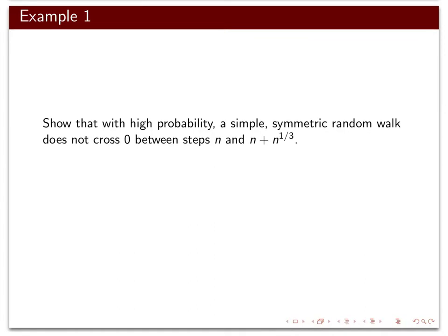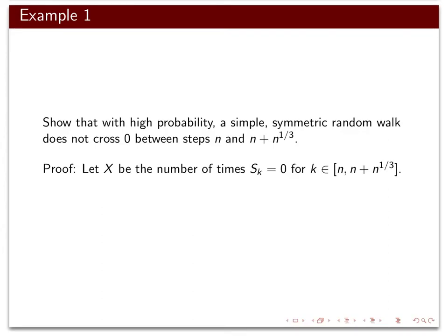For our first example, we look at the simple symmetric random walk — starting at zero, with probability one-half taking a step up and probability one-half taking a step down. We want to show that with high probability, as n goes to infinity, the random walk does not cross zero at any step between n and n plus n^(1/3). The bad events are the random walk crossing zero, and we let x be the number of times these bad events happen — the number of times the random walk crosses zero between step n and n plus n^(1/3). To apply the first moment method, we need to calculate the expectation of x and hope that it tends to zero.